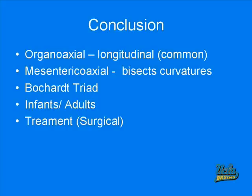In conclusion, the key points of gastric volvulus are: first, the difference between organoaxial and mesentericoaxial gastric volvulus — the main difference is the axis on which the stomach turns, with organoaxial being longitudinal and mesentericoaxial bisecting the two curvatures; organoaxial is the more common of the two. Second, Borchardt's triad is one of the most telltale signs and should be looked for first. Third, infants are usually diagnosed with Type 2 gastric volvulus while adults are diagnosed with Type 1. Finally, the treatment of gastric volvulus is primarily surgical.